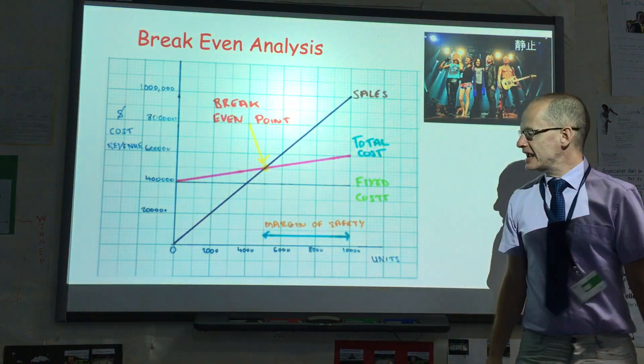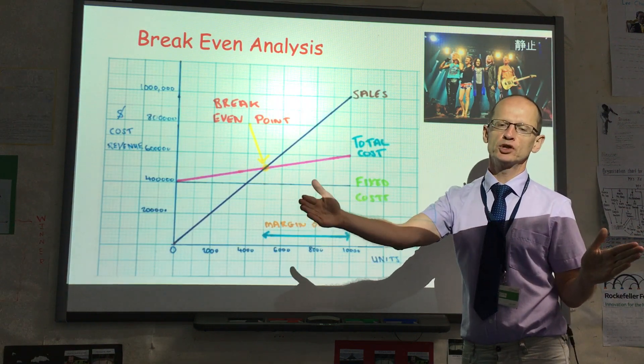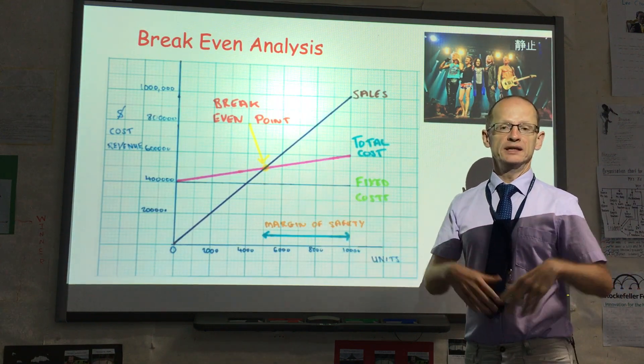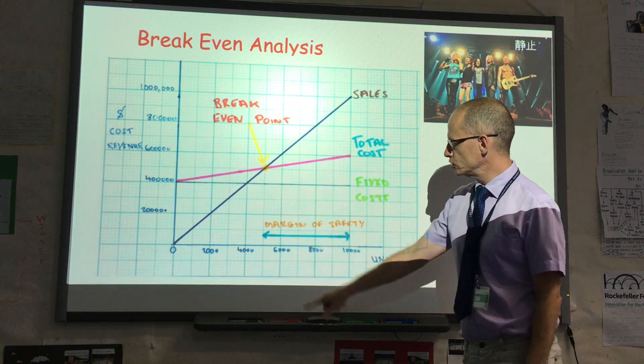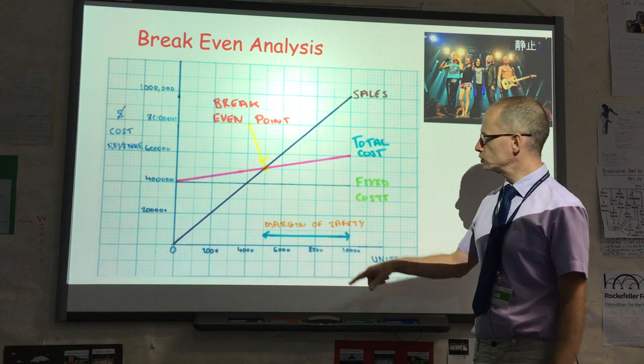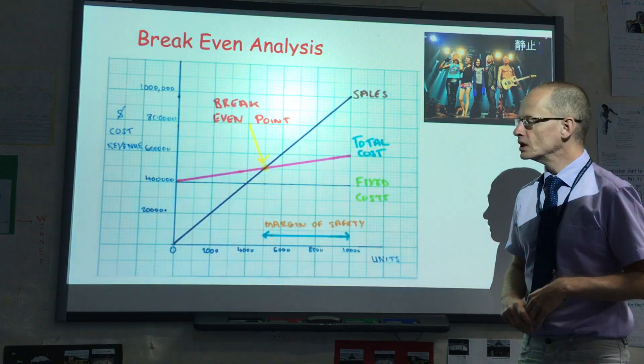The margin of safety is the difference between the break-even point and production, or in this case let's say the total size of the hall. So the break-even point is 5,000, the total number of tickets which could be sold are 10,000, so the margin of safety is 5,000.